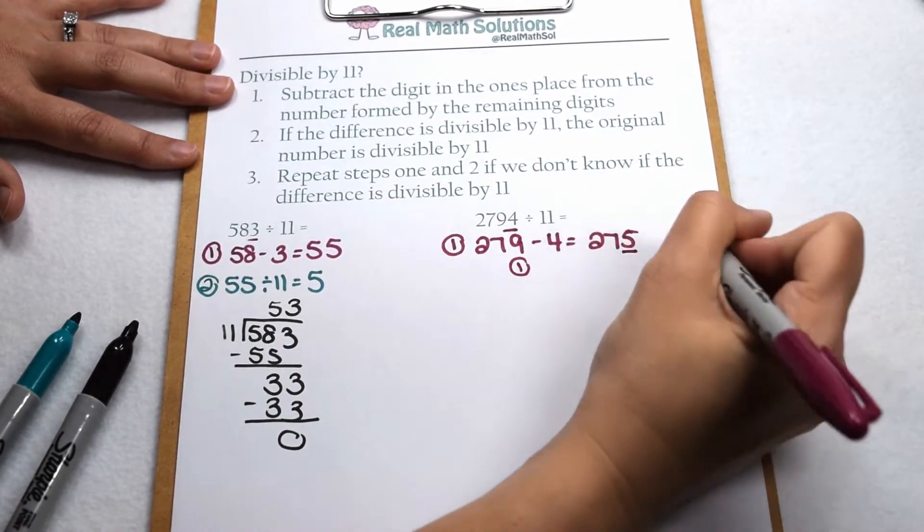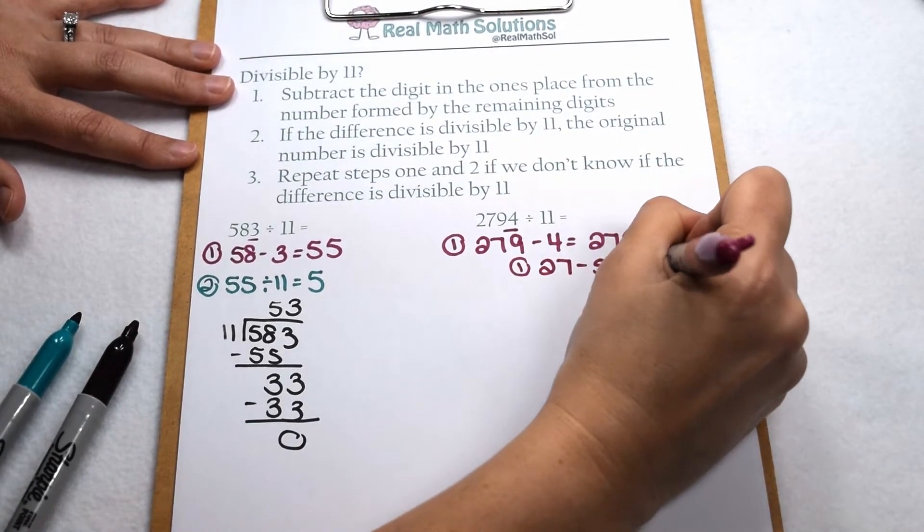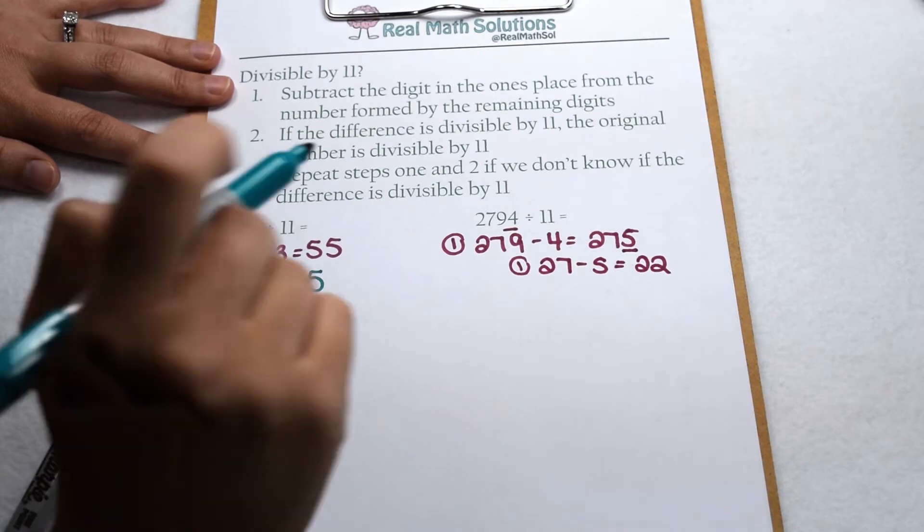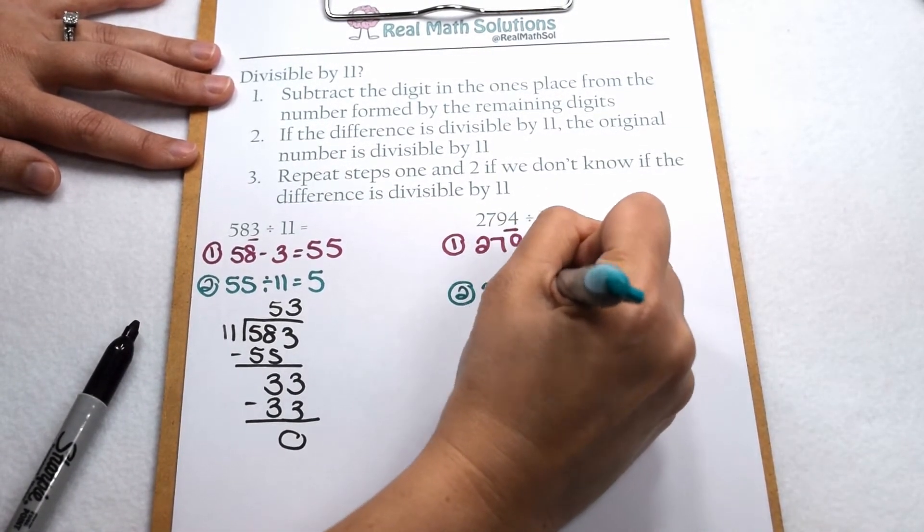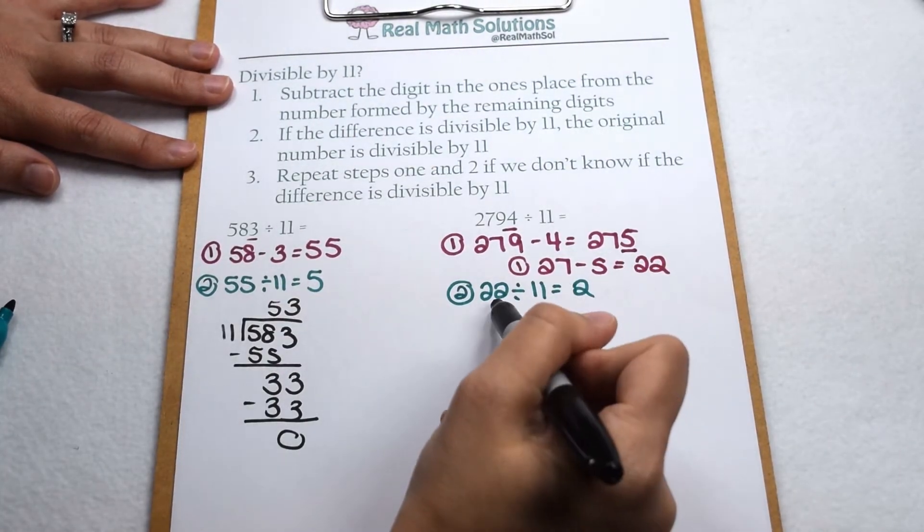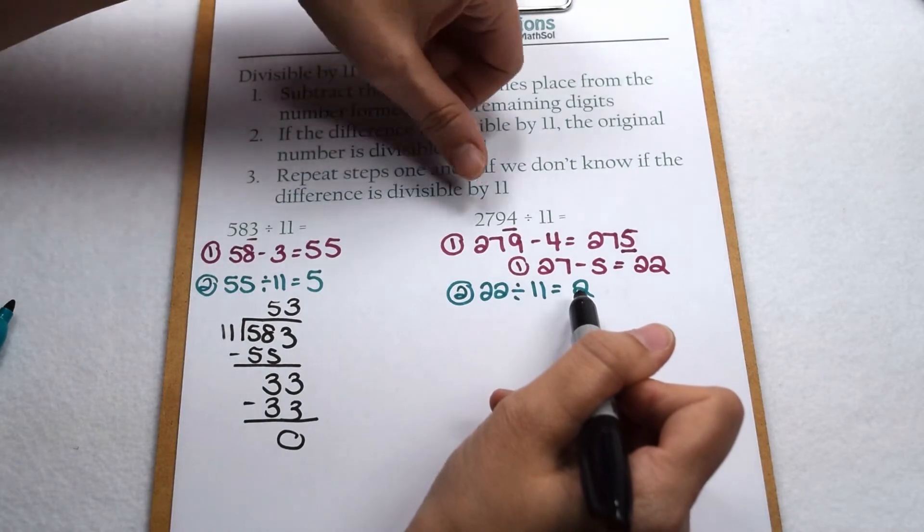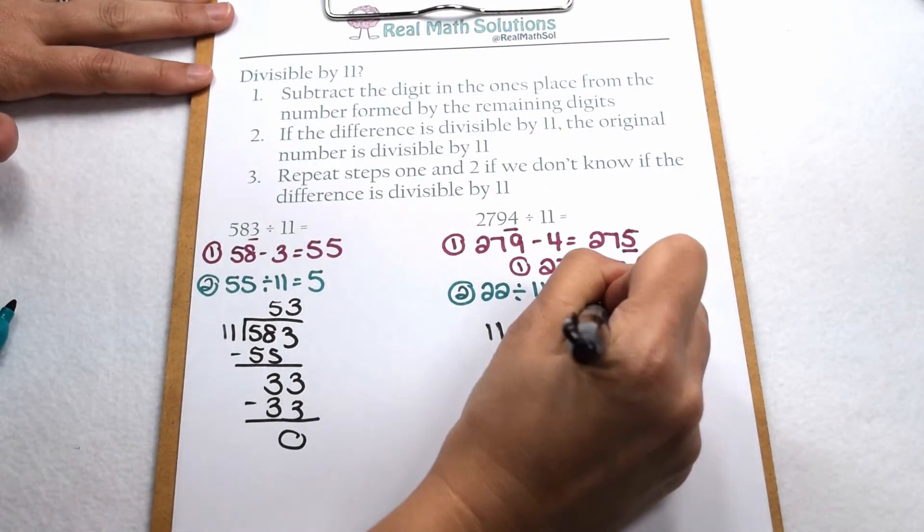To do that, again, I would subtract the ones place from the remaining digits. So that means I would do 27 minus 5. 27 minus 5 leaves me with 22. I know that 22 is going to be divisible by 11 because, again, we have the same digits in the ones and the tens places. I know 22 divided by 11 gives me 2. So I'm going to predict that this again means my original number is going to be divisible by 11.